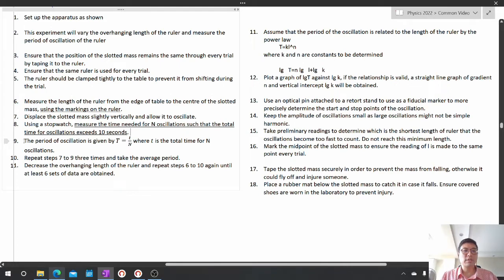The period of oscillation is given by T equals t over n, where t is the total time for n oscillations.